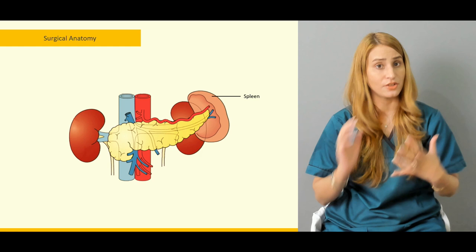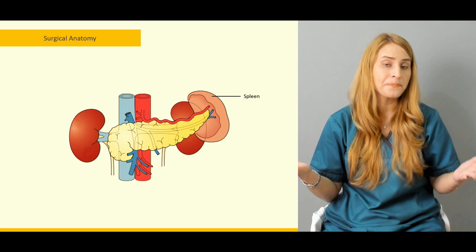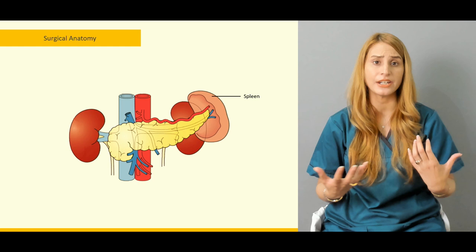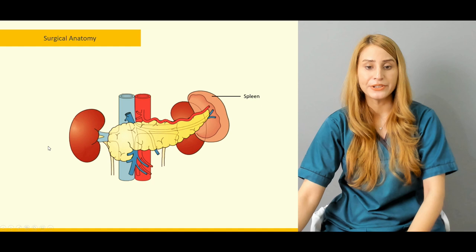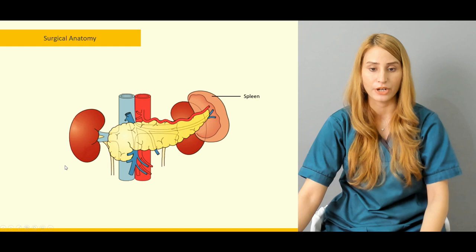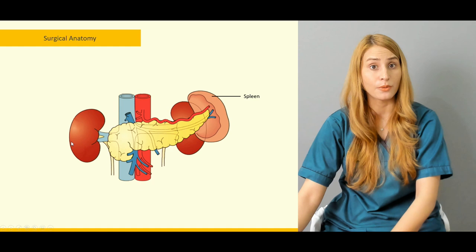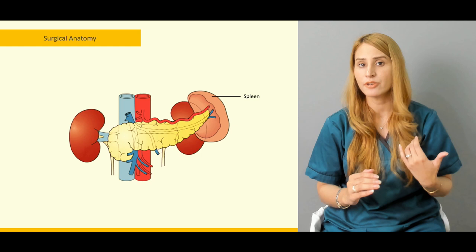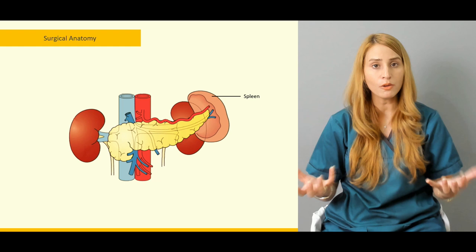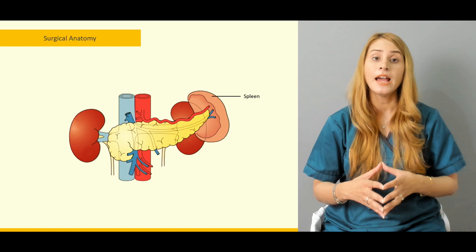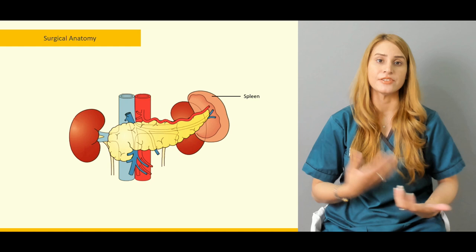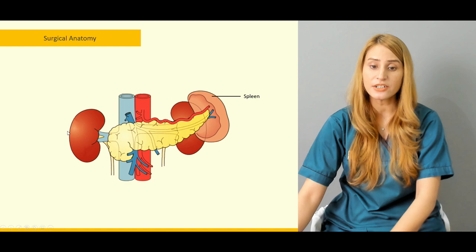This surgical anatomy is very important. A carcinoma of the head of the pancreas can compress the duodenum and involve critical structures like the inferior vena cava and the portal vein. Just behind the head of the pancreas lies the inferior vena cava — a tumor compressing it causes venous pooling and generalized edema, especially in the lower limbs.